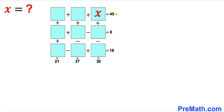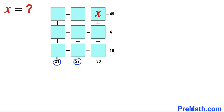Welcome to pre-math. In this video we have a three by three array of empty boxes. If we add or subtract these boxes horizontally we are supposed to get 45, 6, and 18, whereas if we add or subtract vertically we are supposed to get 21, 27, and 30. Furthermore, this specific box has a value x, and our task is to find the value of x only.